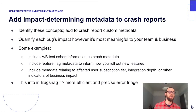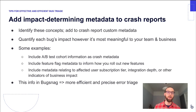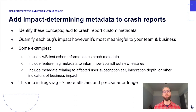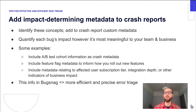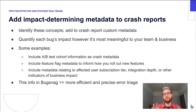The answers to these questions are going to vary a lot from team to team and company to company. What's important is that you give it some thought and find ways to represent this information as crash metadata, because the more this information is tagged on events as custom metadata, the easier and faster it's going to be for your team to quantify bug impact when looking at a bug in BugSnag. Examples include A/B test cohort information, feature flag information, and metadata relating to user subscription tier or integration depth of the affected end user.